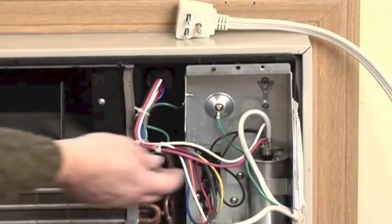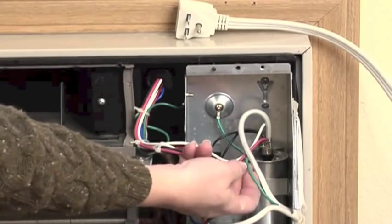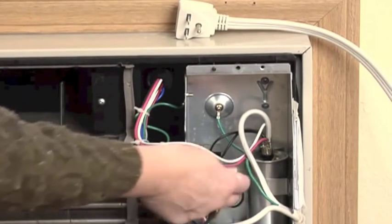A green wire and the third prong in the outlet connects the metal parts in things like air conditioners to those grounded wires.